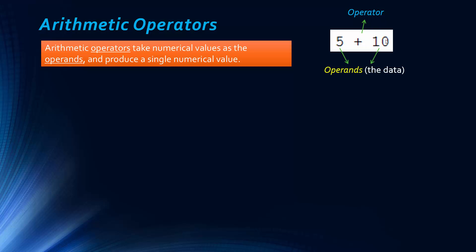And the operands, so the data, 5 plus 10, sorry, 5 and 10. It's also called arguments. It doesn't really matter what you call it. I'm just going to refer to the data used, so in this case numbers, as the operands.